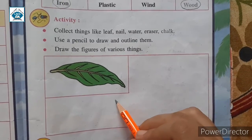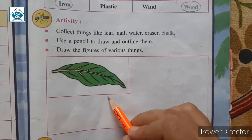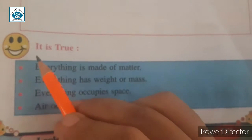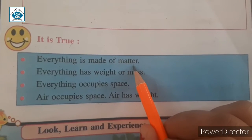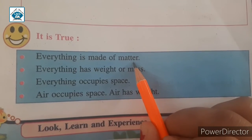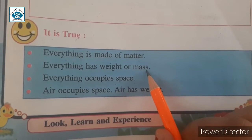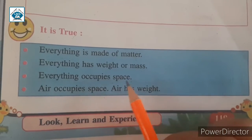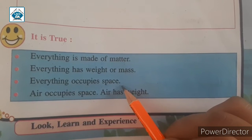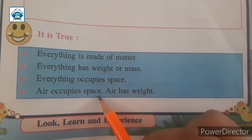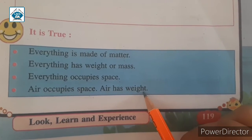In this book, we have the figure of a leaf. Everything is made of matter. Everything has weight or mass. Everything occupies space. Air occupies space and air has weight.